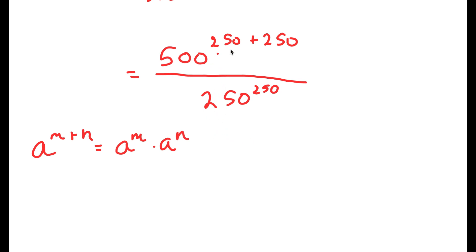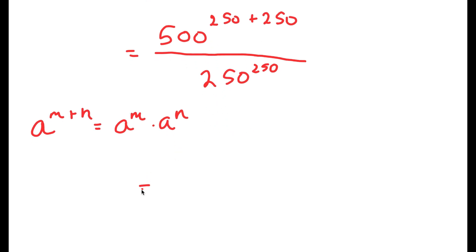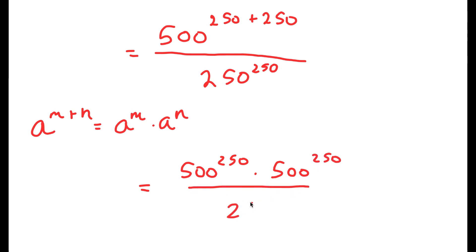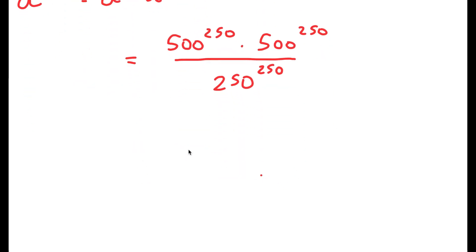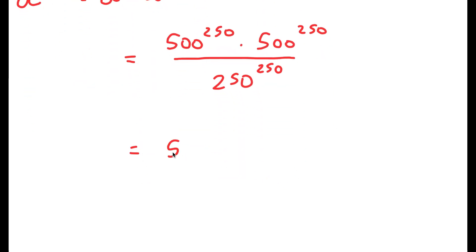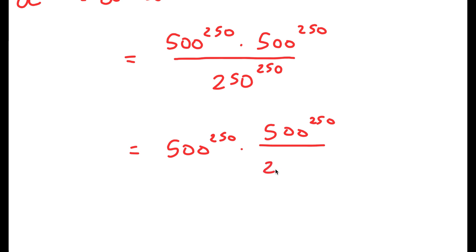So in this case, 500 to the power of 250 plus 250 is equal to 500 to the power of 250 times 500 to the power of 250, over 250 to the power of 250. This turns into 500 to the power of 250 times 500 to the power of 250 over 250 to the power of 250.